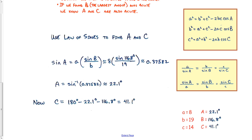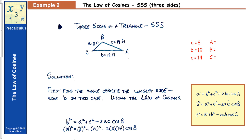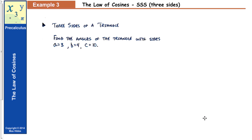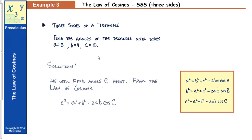Let's look at one more example — problem number 3. Find the angles of a triangle with side A equal to 3, side B equal to 4, and side C equal to 10. Since we know three sides, we'll use the law of cosines, and our strategy is to find the angle opposite the largest side first — that's angle C — using the third version of the law of cosines.